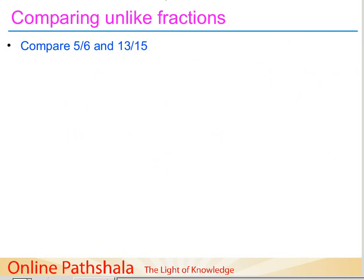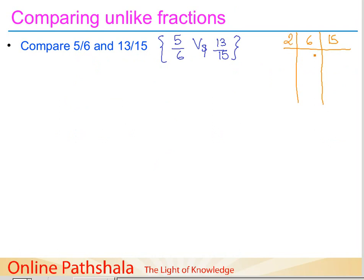Let me take an example to explain this clearly. We are given two fractions: 5/6 and 13/15, and we need to compare them using the LCM method. We write down the two denominators, 6 and 15, and find their LCM. Starting with the smallest factor: 2 times 3 is 6, so 6 breaks down with factor 2, leaving 15 as is. Then using factor 3: 3 times 1 is 3 and 3 times 5 is 15. The remaining factor is 5. So the LCM of 6 and 15 is 2 × 3 × 5 = 30.